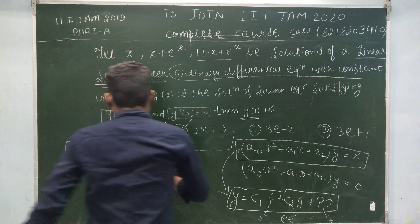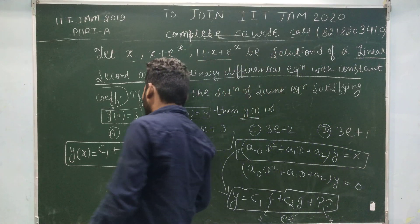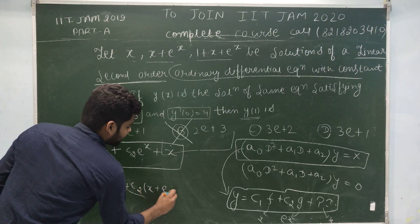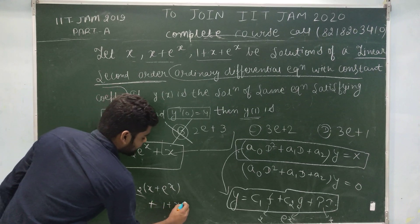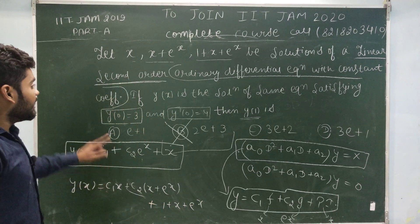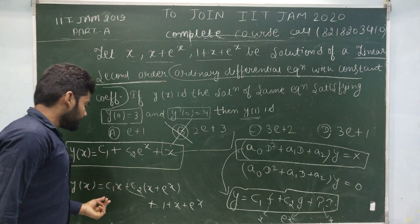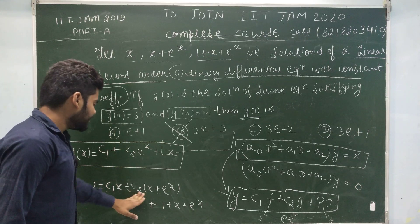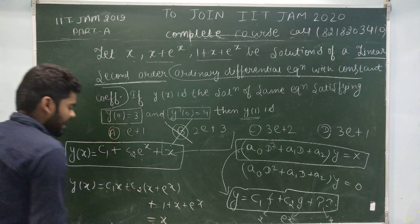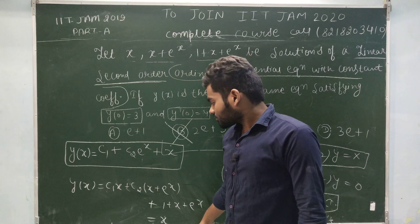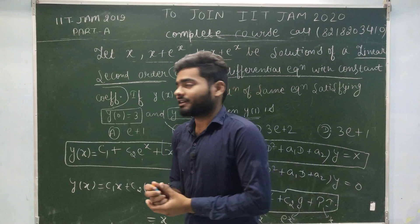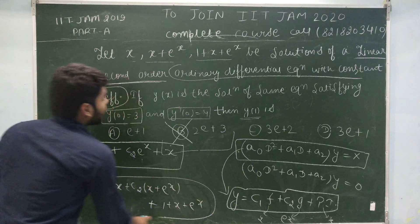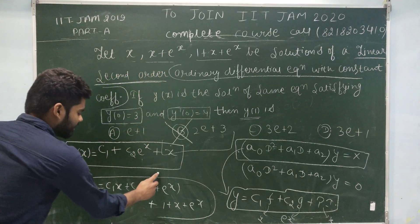Most students incorrectly assume the solution as y(x) = c₁x + c₂(x + e^x) + (1 + x + e^x). This is wrong. If you want to generate just x from this expression, there are no values of c₁ and c₂ that satisfy it — there will be a contradiction. For no values of c₁ and c₂ can this whole expression equal x or x + e^x, so you cannot assume the solution in that form.